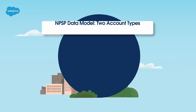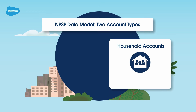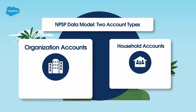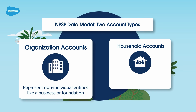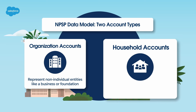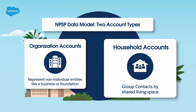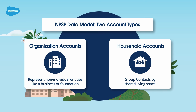In the NPSP data model, there are household accounts and organization accounts, which serve distinct purposes in managing contact relationships. Organization accounts represent businesses, foundations, or other non-individual entities. Household accounts are primarily used to group individual contacts together within a family or shared living arrangement, streamlining data management for related individuals. We'll focus on household accounts in this video.